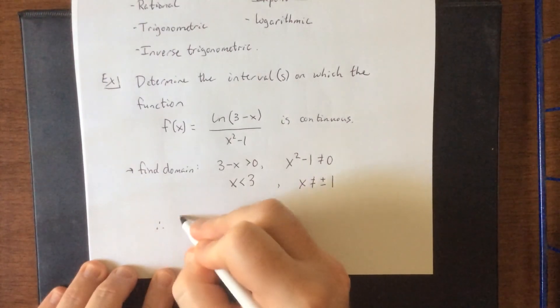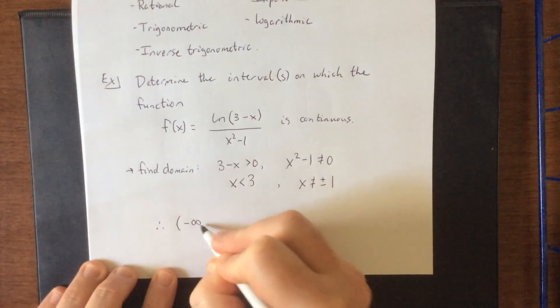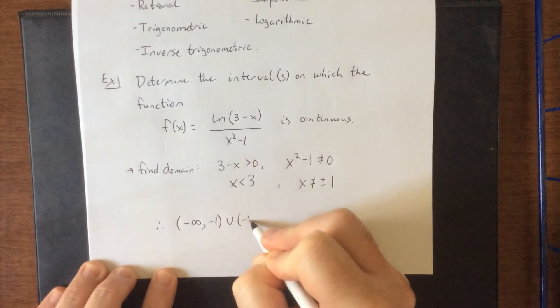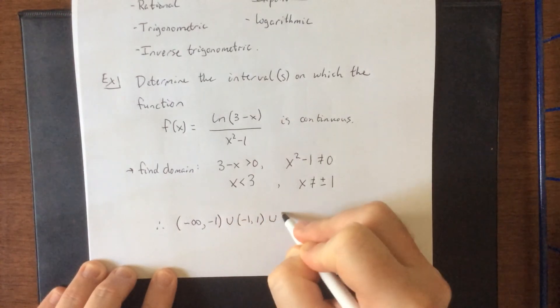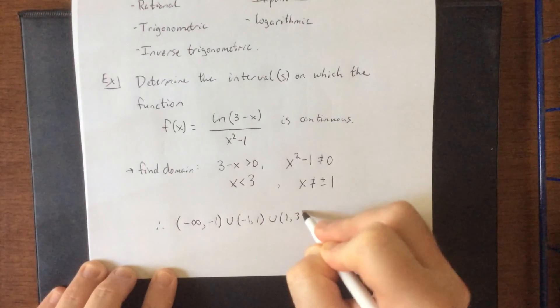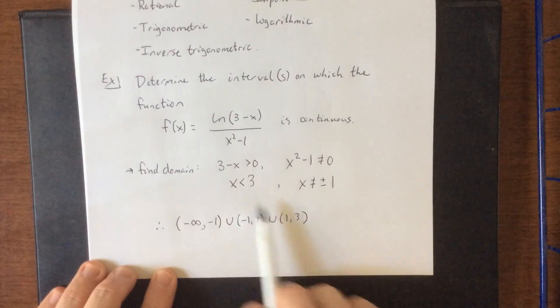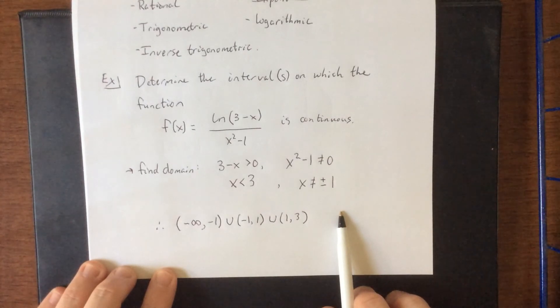Therefore, our final answer is going to be from negative infinity to negative 1, union negative 1 to positive 1, union 1 to 3. That represents all of the real numbers that are less than 3, but not equal to neither positive 1 nor negative 1.